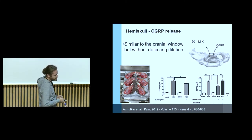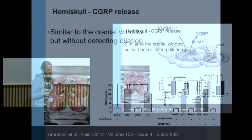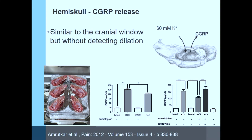Taking this a step further — instead of seeing the vasodilation directly, you can just measure the CGRP. In the hemiskull model, where you collect fluid from inside the skull from the dura, you get very nice CGRP release when you stimulate the nerves with potassium, and you can again inhibit it with triptans. So what we're really looking for is models where we can use the knowledge of clinical compounds that work, apply them in animal models, and study the molecular effects.